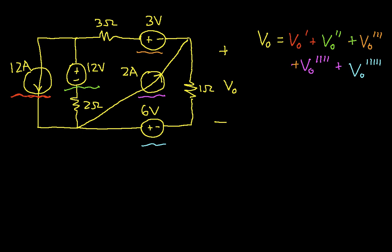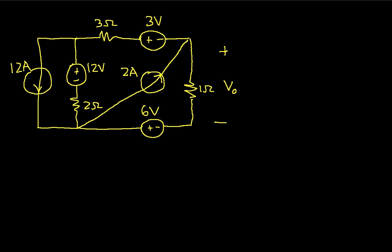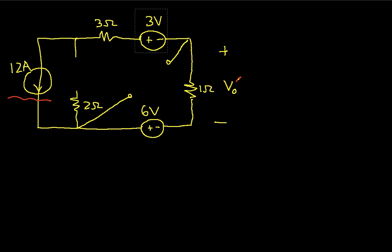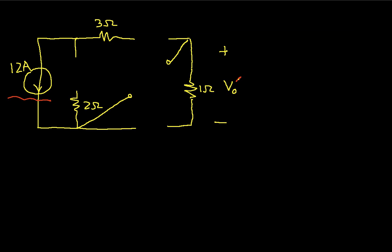We'll go to a clean diagram. We want V0 prime in this case, which will be the voltage due to this 12 amp source. The first thing I need to do is set the other sources to zero. I set a current source to zero by just completely eliminating it — there's no connection, it's an open circuit. I set the voltage sources to zero by replacing them with short circuits, so I'll have a short circuit here, a short circuit here, and a short circuit here.